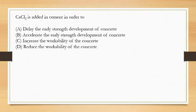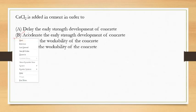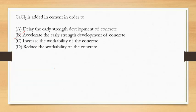Next question: CaCl2 is added in cement in order to? Calcium chloride accelerates the hydration process. Hydration is the reaction between cement and water, responsible for strength development. Since calcium chloride accelerates the hydration process, it is added to accelerate the early strength development of concrete.